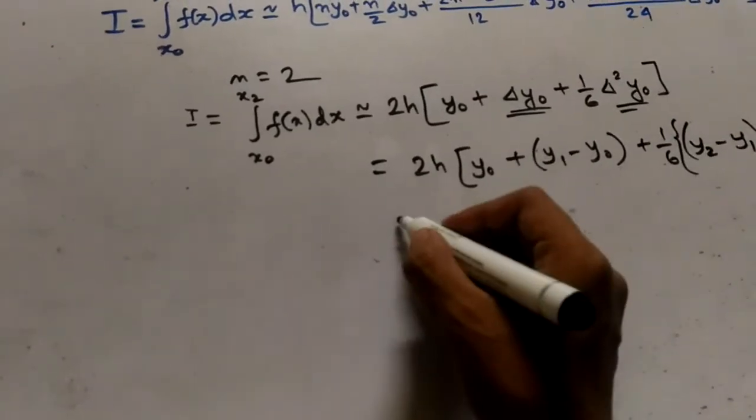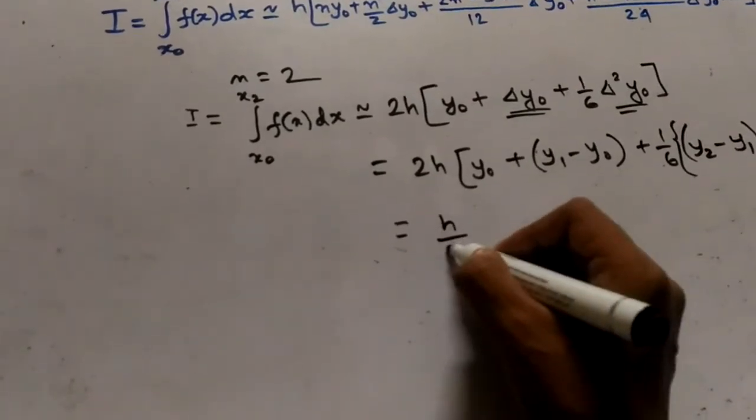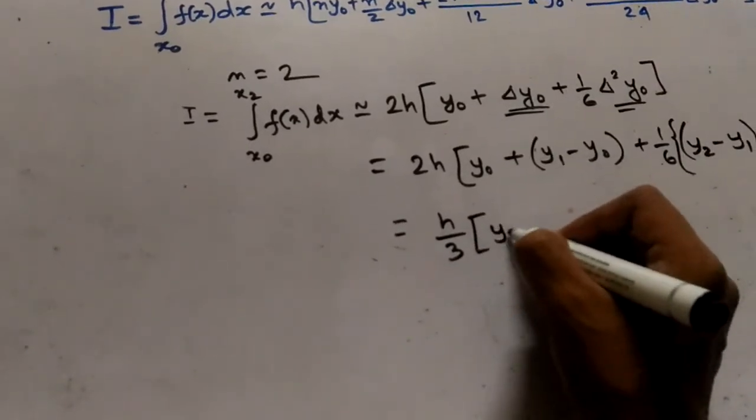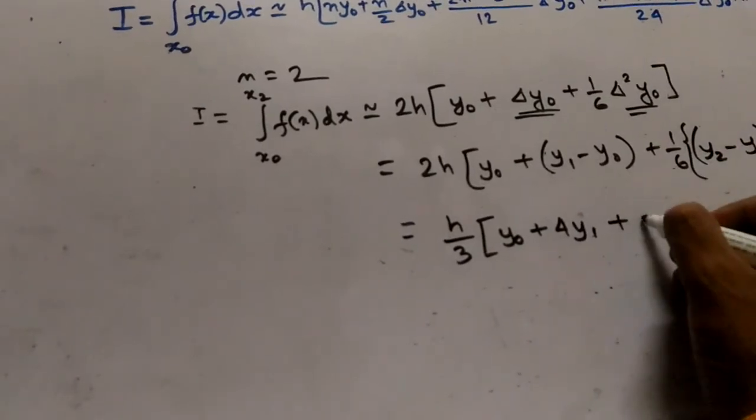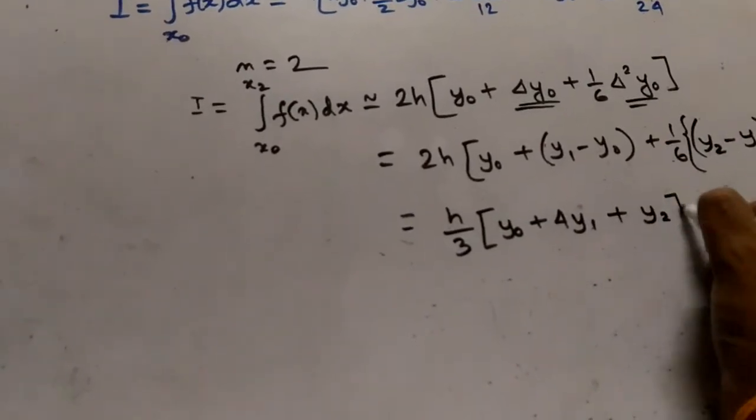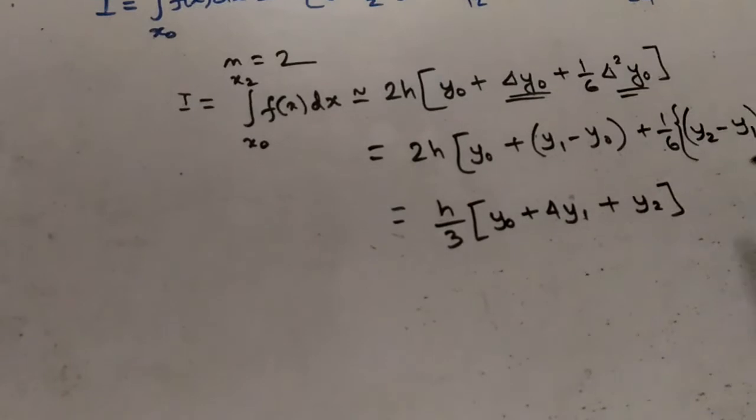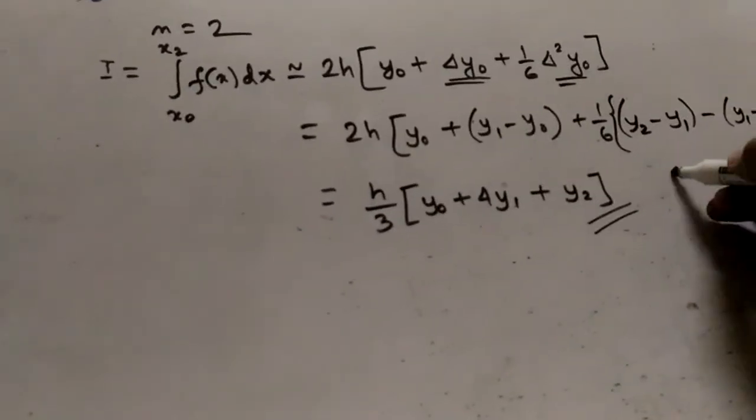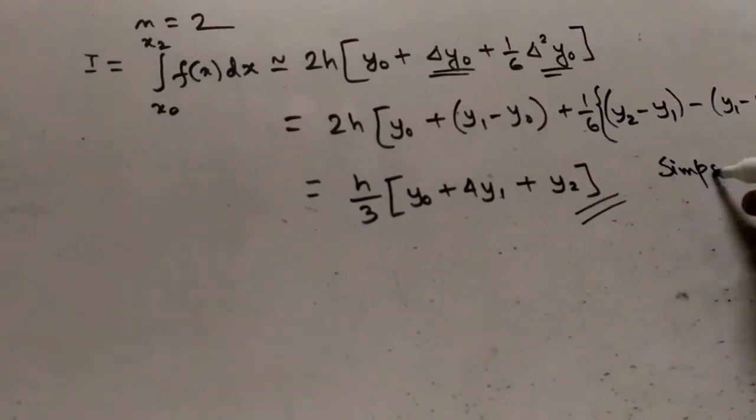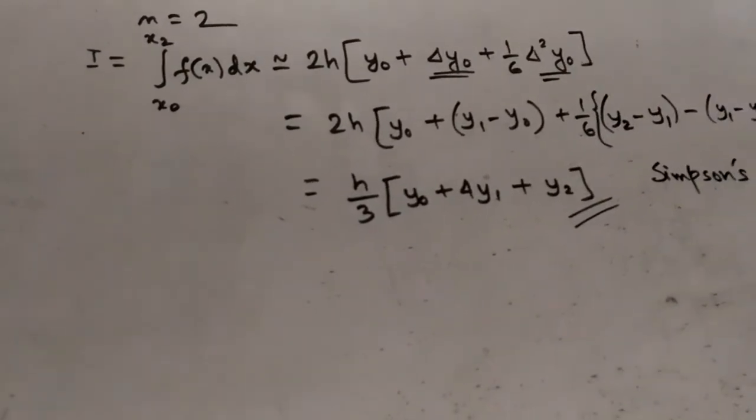Which is equal to h/3 times y0 plus 4y1 plus y2. Now this is known as the Simpson's formula.